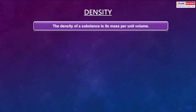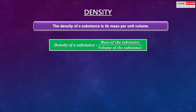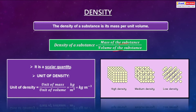Now, density: the density of a substance is its mass per unit volume. The formula is: density = mass of the substance divided by volume of the substance. Density is a scalar quantity because direction is not involved. The unit of density is kilogram per meter cubed. A substance with very compact material has high density, one with medium compactness has medium density, and one built up of very loose material has low density.